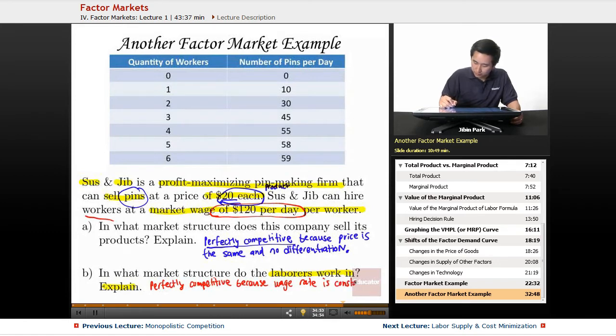You have two different markets and it just happens to be that they're both perfectly competitive. You have to understand, even though there's not a whole lot of information, how to determine which is a factor market and which is a product market.